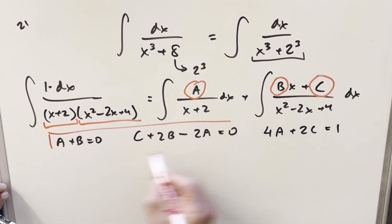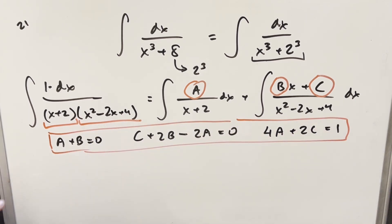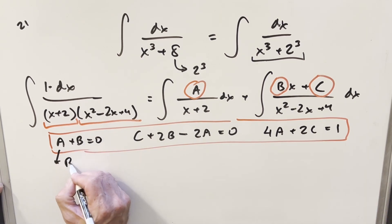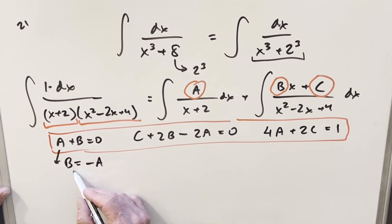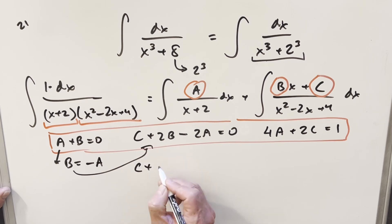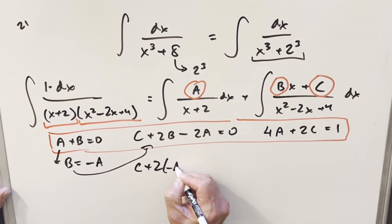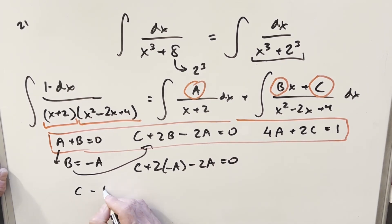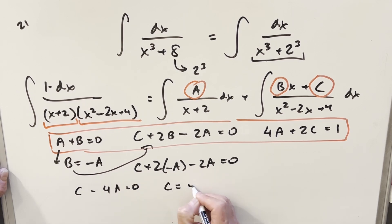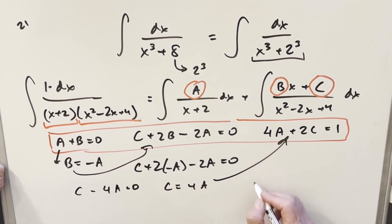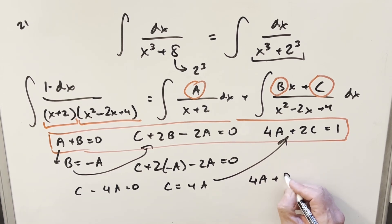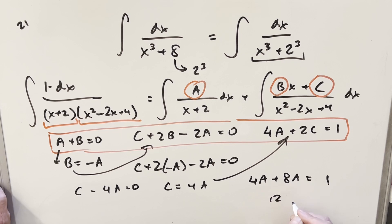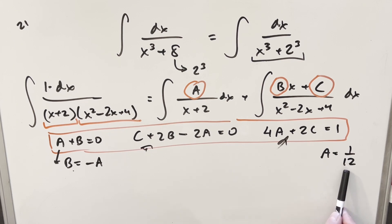Now we have a system of equations and just need to solve for A, B, and C. From the first equation, b equals minus a. Plugging into the x-terms equation: c plus 2 times minus a minus 2a equals 0, which gives c minus 4a equals 0, or c equals 4a. Substituting into 4a plus 2c equals 1: 4a plus 2 times 4a gives 12a equals 1, so a equals 1 over 12.